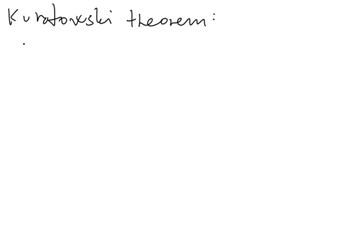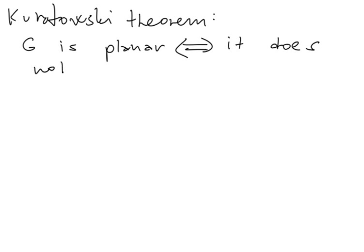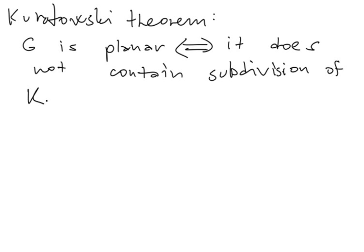This leads to a classical result known as Kuratowski's theorem, which states that a graph G is planar if and only if it does not contain a subdivision of K5 or K3,3. So these two bad graphs we identified at the beginning are exactly the...